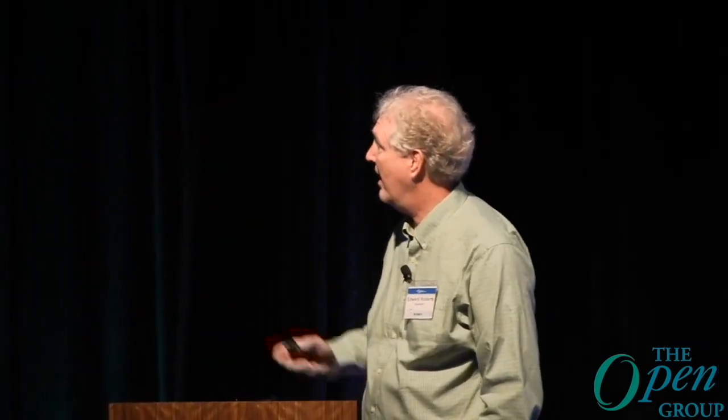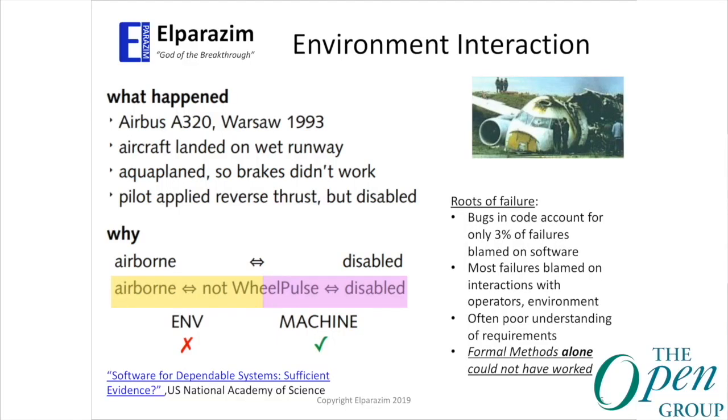There were a series of accidents that happened, and what concerned people was that if a safety case had been well-written, those accidents could have been avoided. One example: an airplane landed, the pilot pulled out the thrust, and it didn't work because there was water on the runway — the wheels hydroplaned and didn't engage. The software requirement said you had to sense wheel rotation before enabling reverse thrust, to prevent reverse thrust in the air. But it wasn't a software problem — it was a failure to understand how the software and the environment work together.